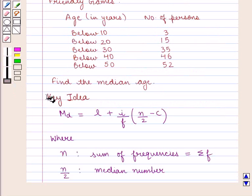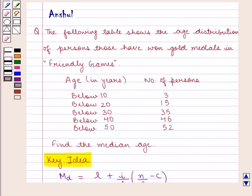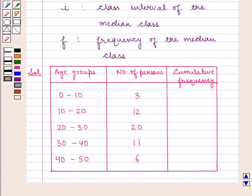With this key idea, we shall proceed with the solution. The frequencies we are given are cumulative frequencies, so first we shall convert them into absolute frequencies. We have divided the age groups between 0-10, 10-20, 20-30, 30-40, and 40-50 years.